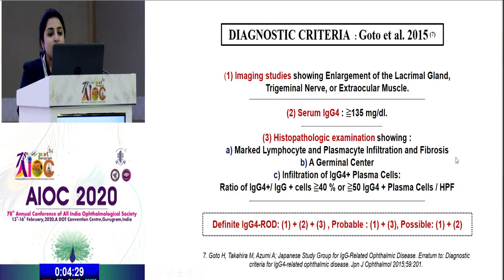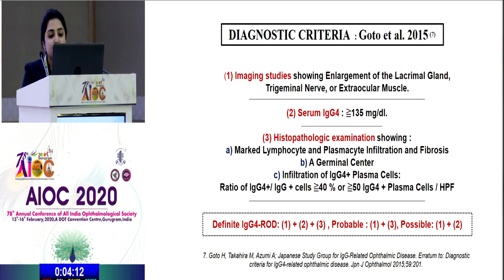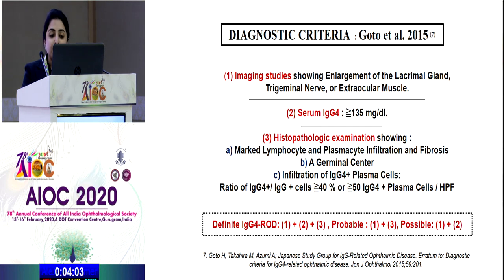We followed the latest criteria by Goto et al., divided into three domains. First, imaging studies showing typical enlargement of the lacrimal gland, trigeminal nerve, or extraocular muscles. Second, serum IgG4 level greater than 135 mg per deciliter. Third, histopathological examination showing marked lymphocyte and plasmacyte infiltration with fibrosis and germinal centers, along with IgG4 cell infiltration greater than 40%, or more than 50 cells per high-power field. Patients were classified as definite when all three criteria were met, probable when imaging and histopath criteria were met, and possible when imaging and serum IgG4 criteria were met.